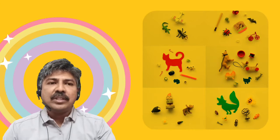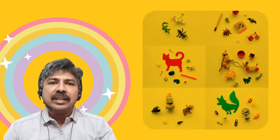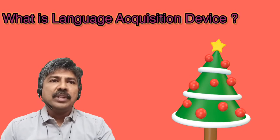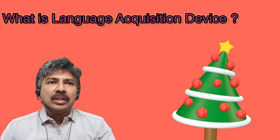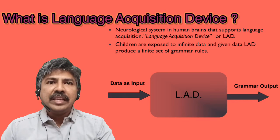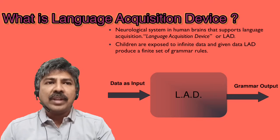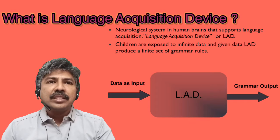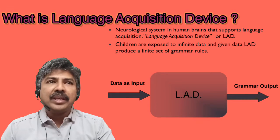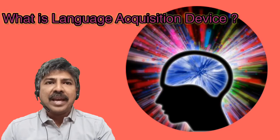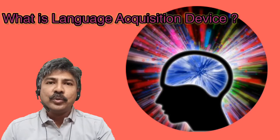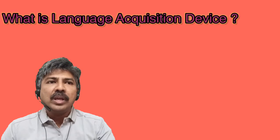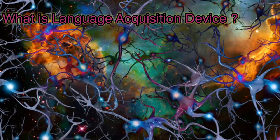Contrary to these views, Chomsky felt language is a natural object, a component of the human mind, which consists of a Language Acquisition Device helpful for learning languages. Chomsky believes that every child has a Language Acquisition Device, or LAD, which imports the major principles of language and its grammatical structures into the child's brain. LAD is a theoretical concept and not a physical component in our brain — it is an intrinsic mental capacity which enables an infant to acquire and produce language.